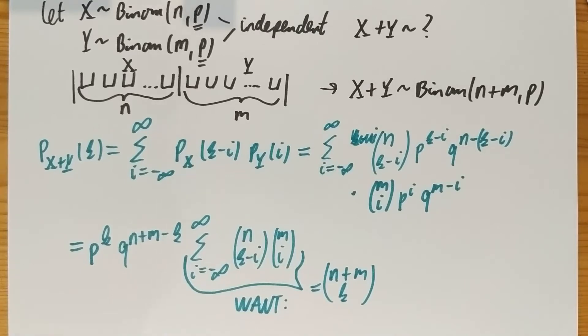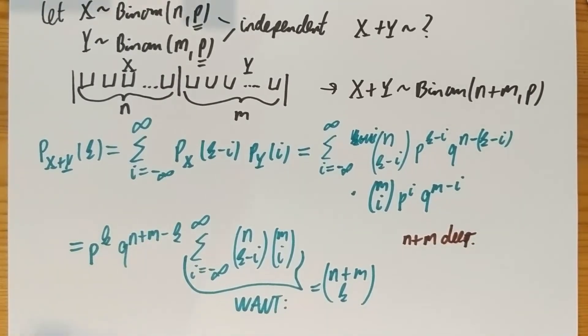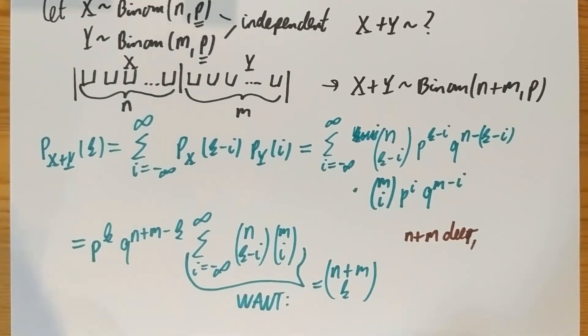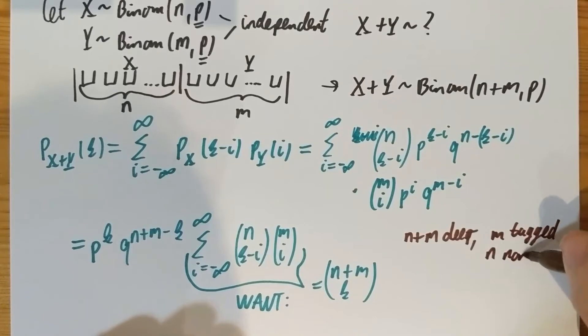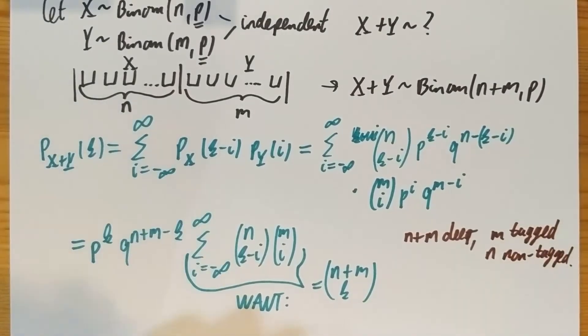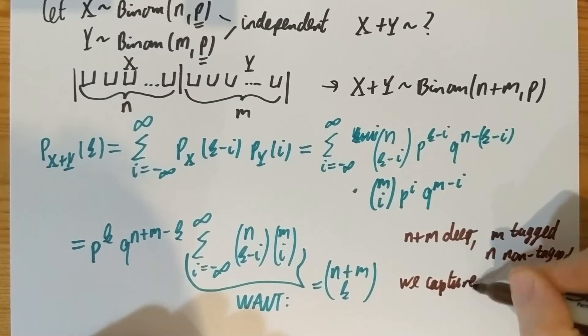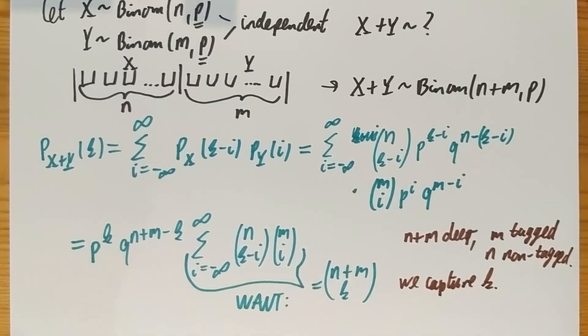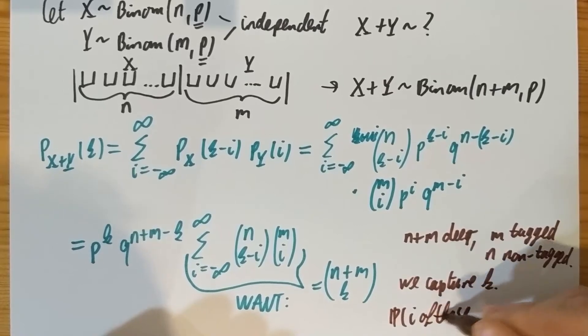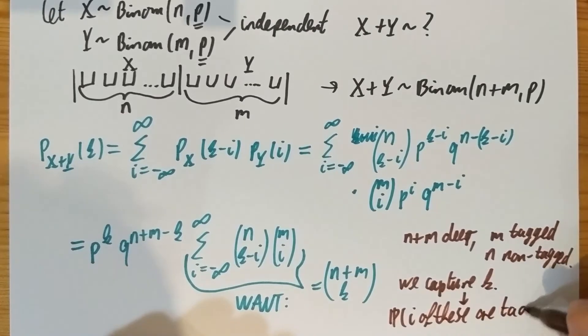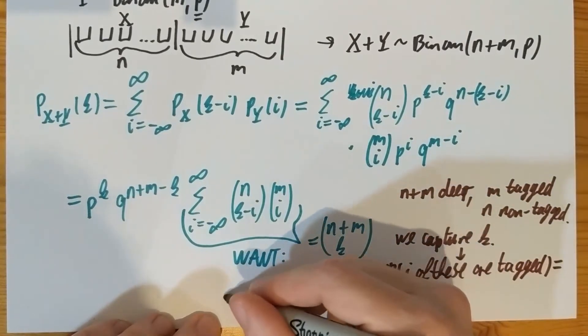Now let's look at this carefully and let's now go back to a tale we had before. Let's assume that we have N plus M deer in the forest. And let's assume that M of them are tagged, and therefore N non-tagged. And let's assume that we capture K of them, and we want to find out what is the probability that I of these captured are tagged.